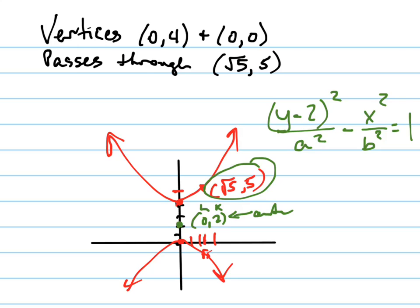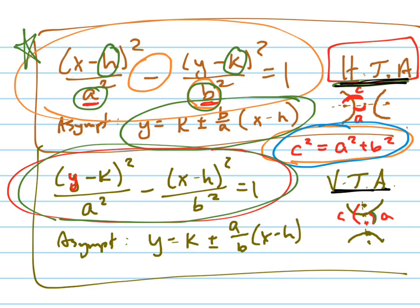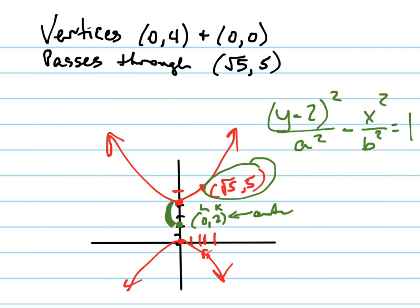Now what do I already have? What's this distance right here? That distance between... That's a. That distance right there. Look at our picture here. It's a. So I already have a², which is 4. So (y - 2)²... Let me just erase this and I'm going to write 2 in there.